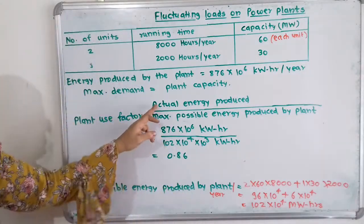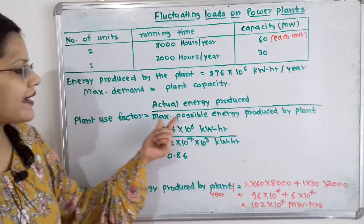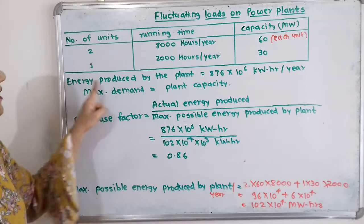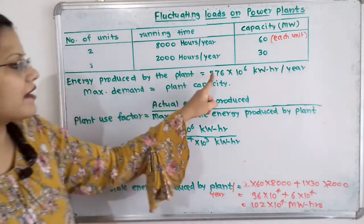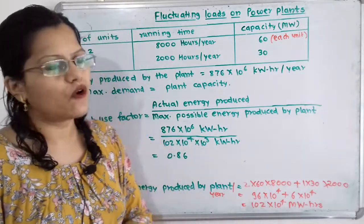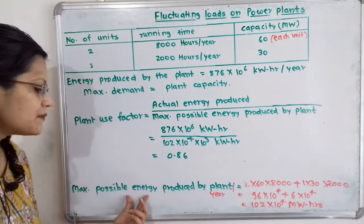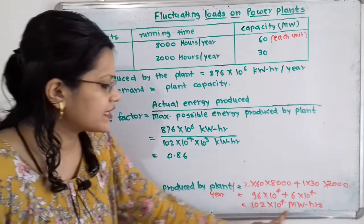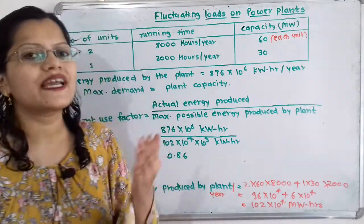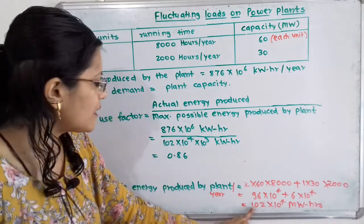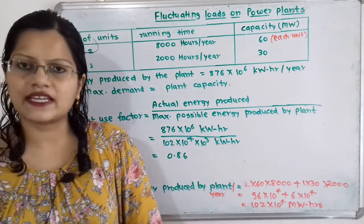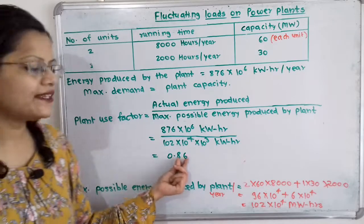Plant use factor = actual energy produced divided by maximum possible energy produced by the plant. Actual energy produced is 876 × 10^6 kWh per year. Maximum possible energy is 102 × 10^4 MWh per year. To convert MWh to kWh, we multiply by 10^3, giving 102 × 10^7 kWh. The kWh units cancel, and the plant use factor = 0.86.